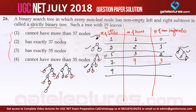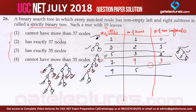If the total number of nodes is 9, you can draw it in many different ways, but in every case you get exactly 5 leaf nodes and 4 non-leaf nodes. Similarly, if we have a total of 11 nodes, the leaf nodes are 6 and the non-leaf nodes are 5.